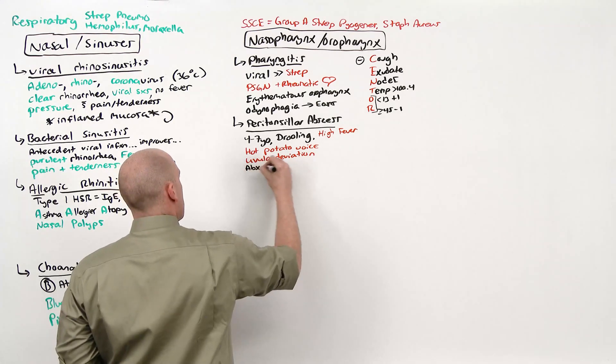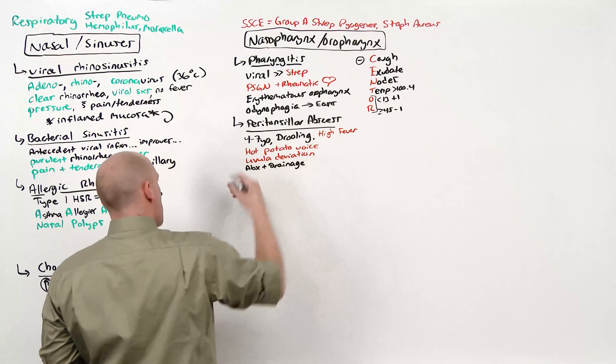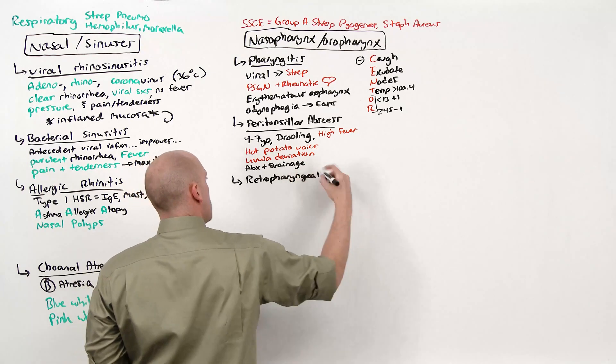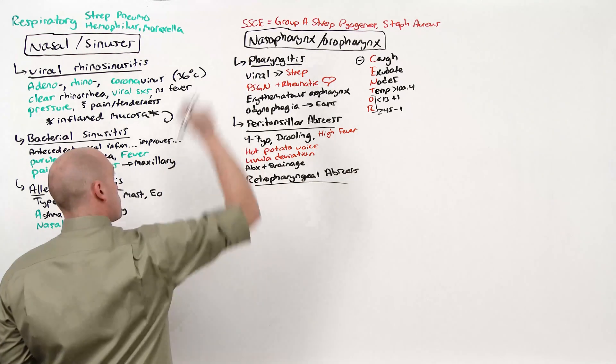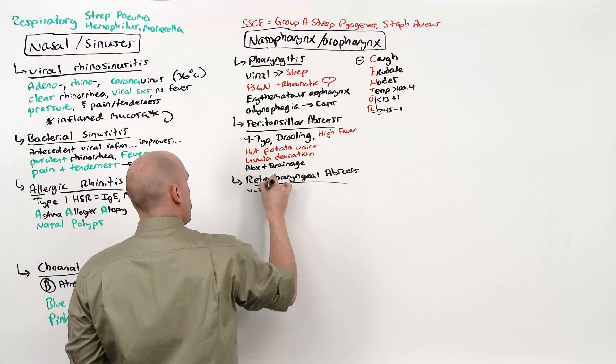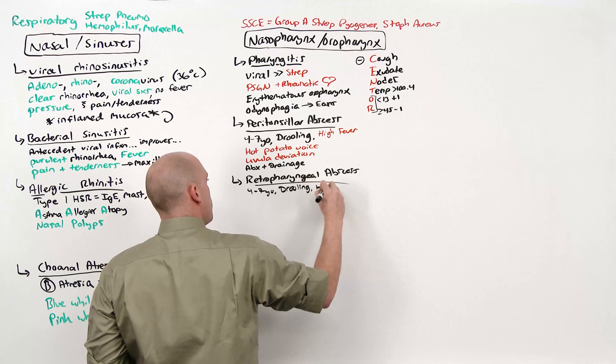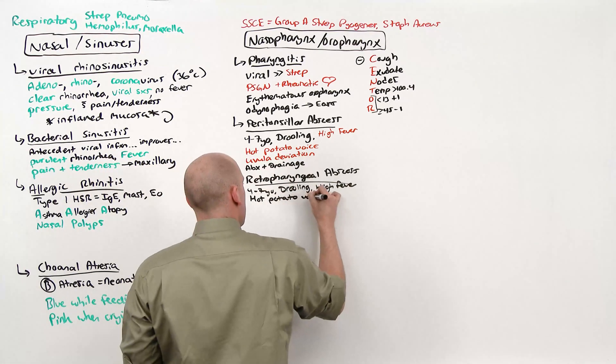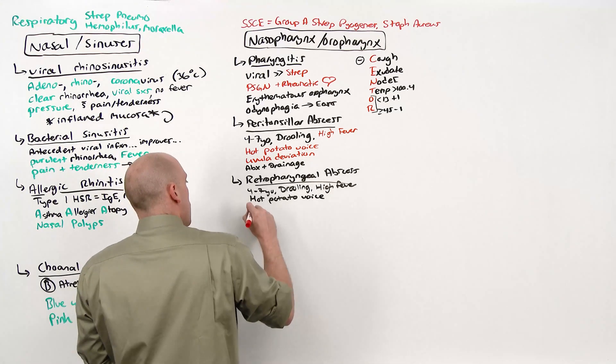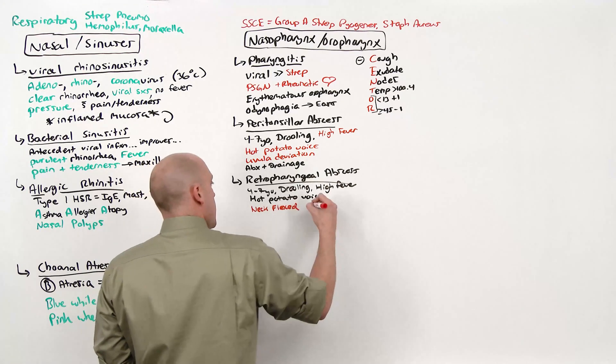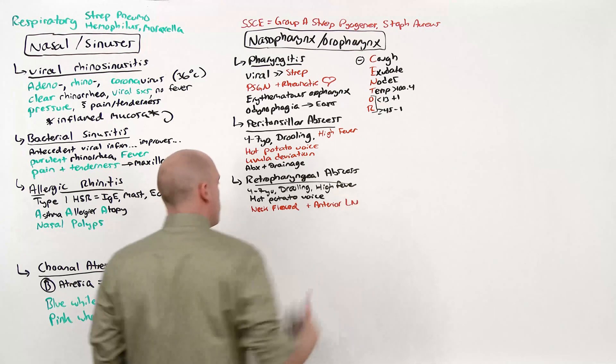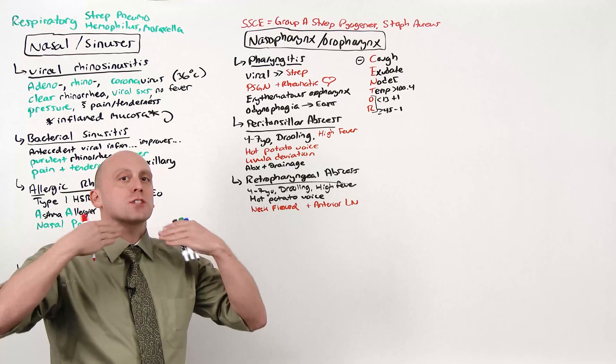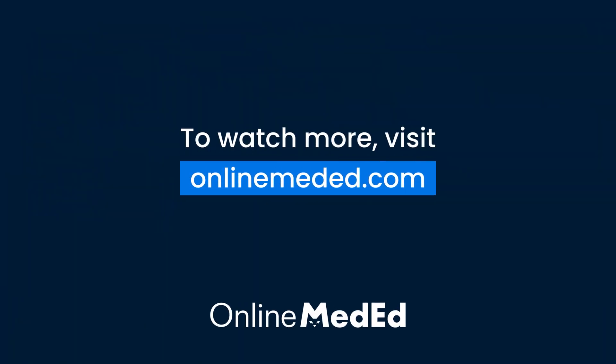This does need antibiotics and drainage, but it is not nearly as severe as the most severe bacterial infection which is retropharyngeal abscess. Pharyngitis plus plus. It's going to be four to seven years old. You're going to be drooling, have a high fever, hot potato voice. But instead of uvular deviation, the patient is going to present with their neck flexed and anterior cervical lymphadenopathy. It's a retropharyngeal abscess in the back of their throat. If they extend their neck it brings the back closer and it touches the structures up front, which hurts.